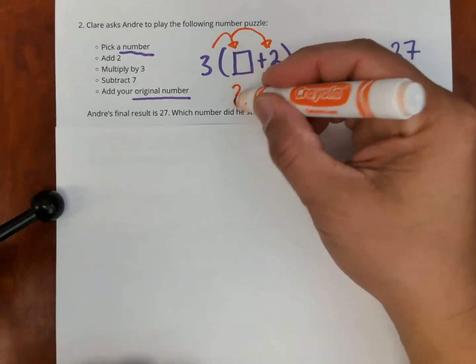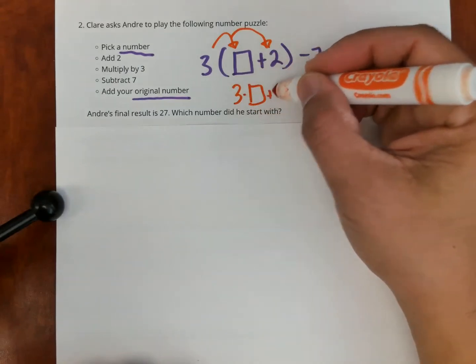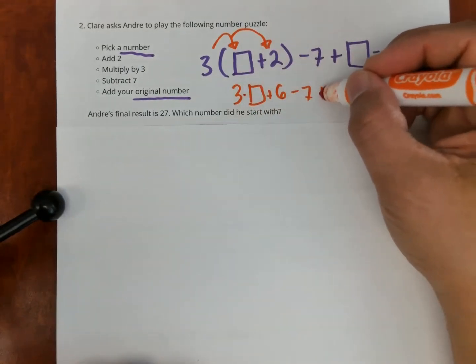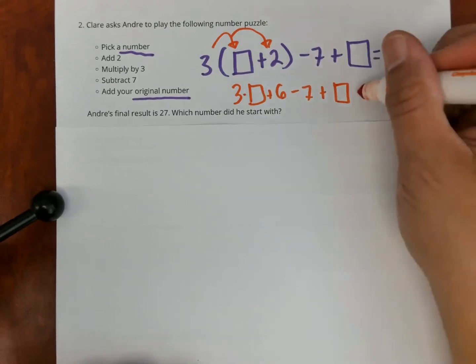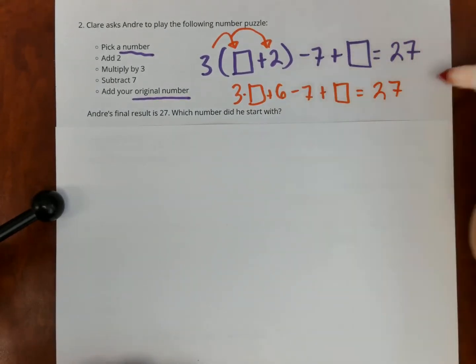This is going to be three times my number, plus six, minus seven, plus my number is 27.